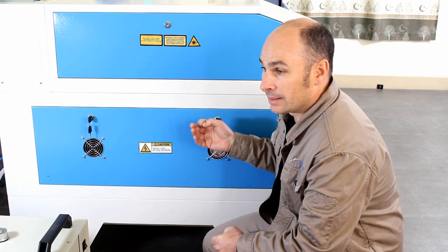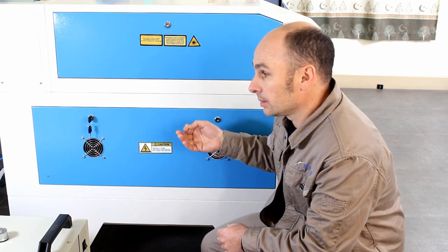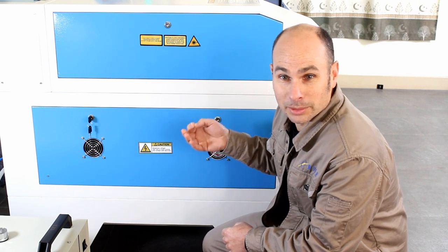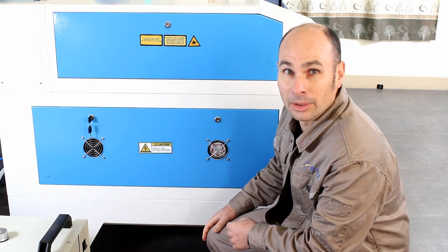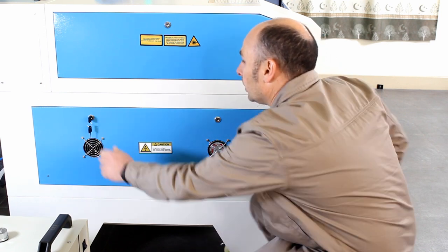We're just going to take a look at your high voltage power supply with your Thunder Laser. This is basically the powerhouse supplying voltage to your glass laser tube. It's a critical component of your machine. Take a look in here.